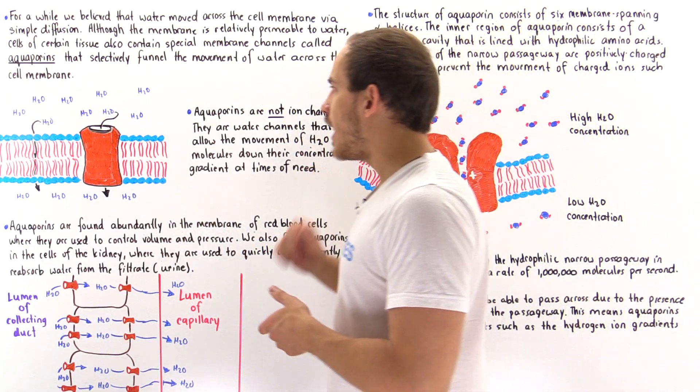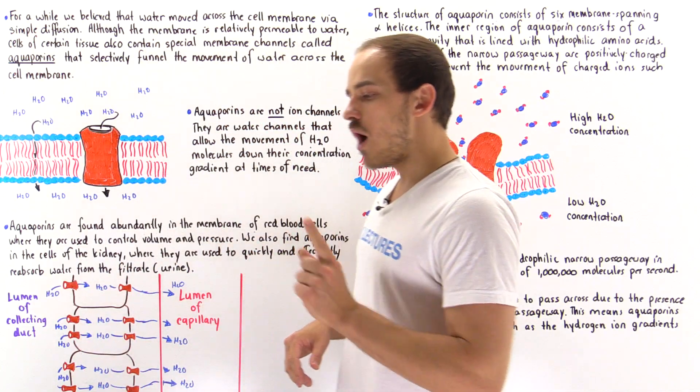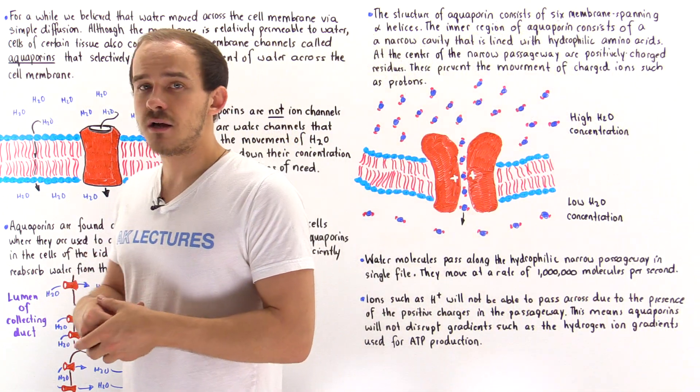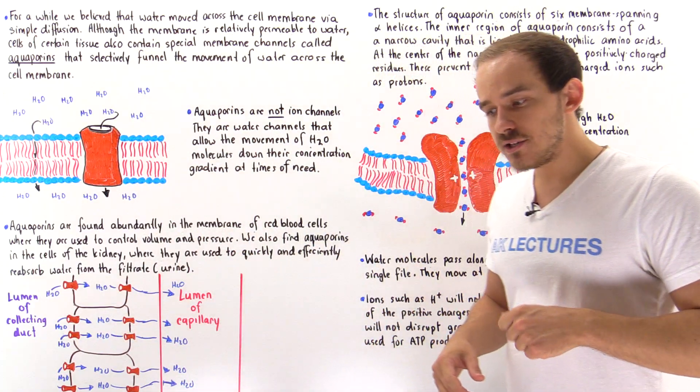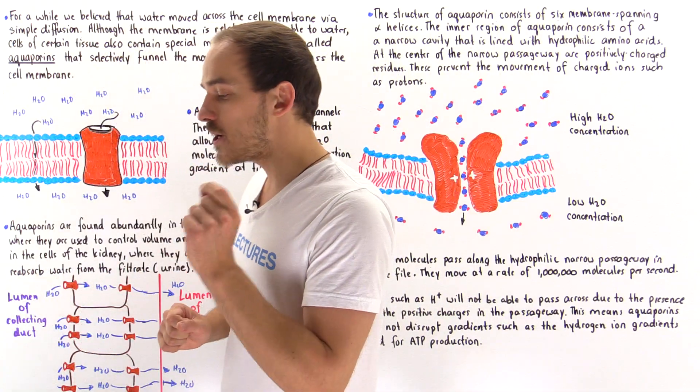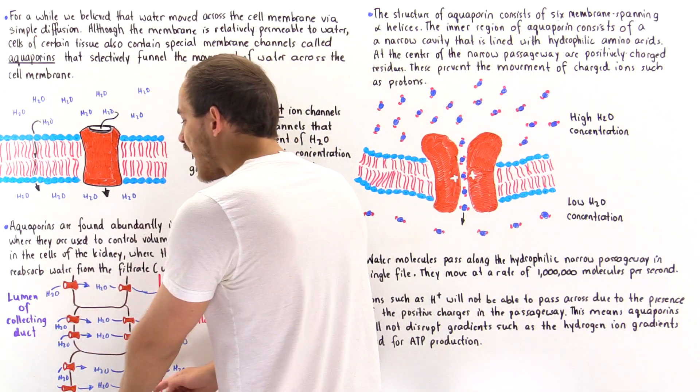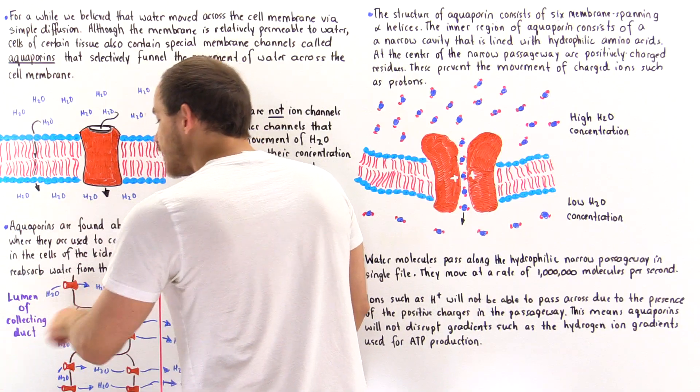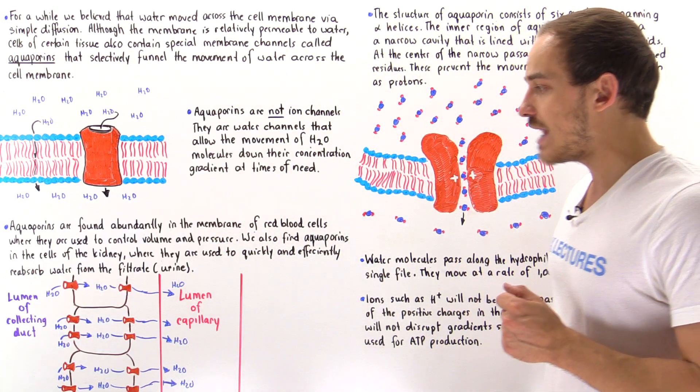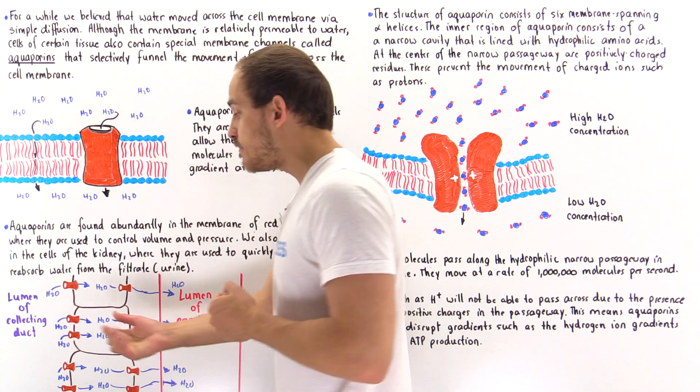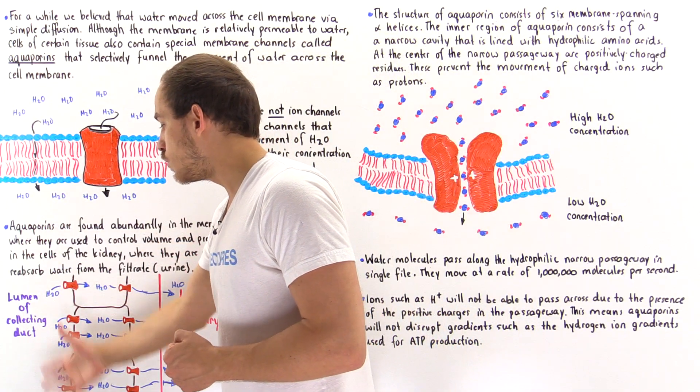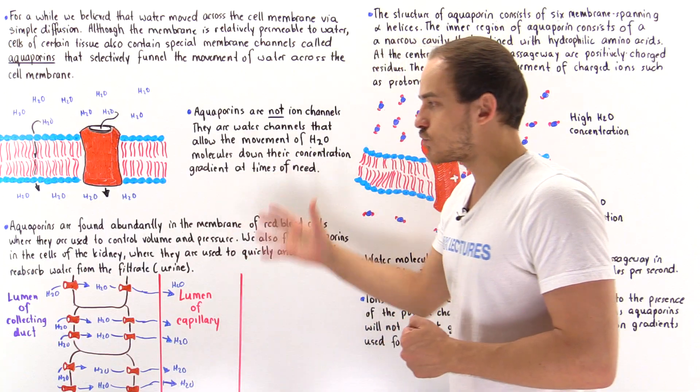Another location where we find aquaporins abundantly are the cells of the kidneys. The kidneys basically produce the urine, the filter that eventually becomes the urine. One important function of the kidneys is to basically reabsorb as much water as possible, and this must take place very quickly. If we examine the cells found within or next to the lumen of the collecting duct, we'll see that these cells express a high concentration of these aquaporin channels, which are used to basically reabsorb as much water as possible back into the capillaries. The water moves from the high concentration to the low concentration.